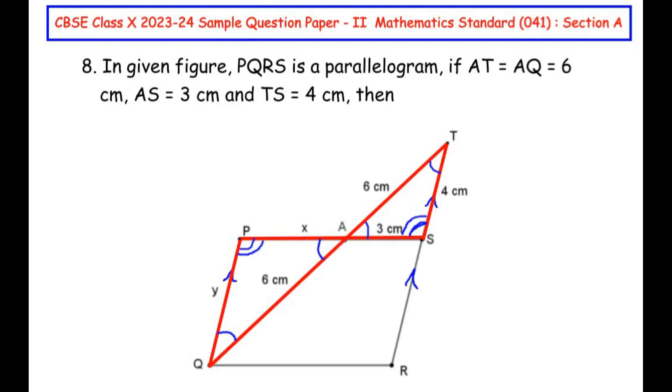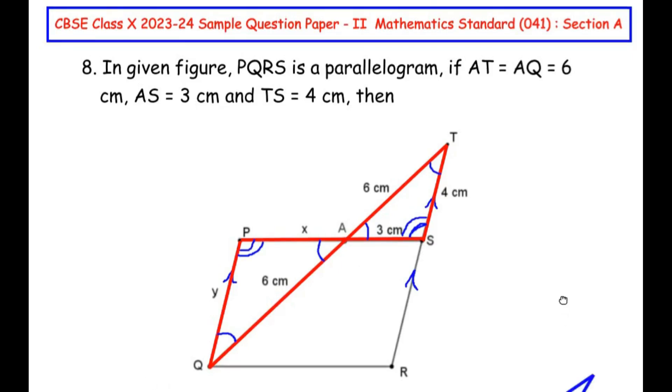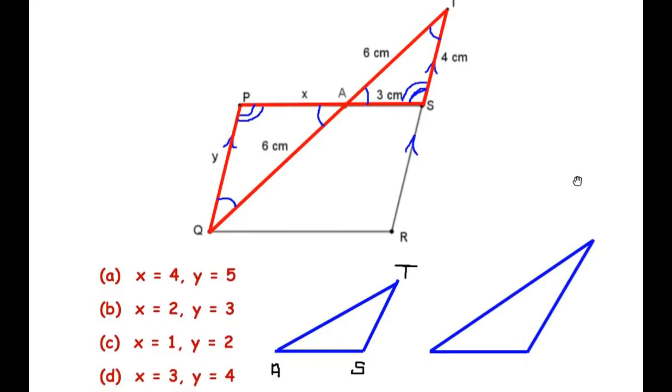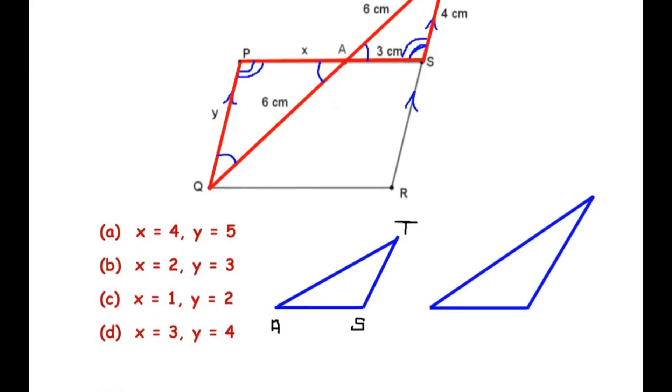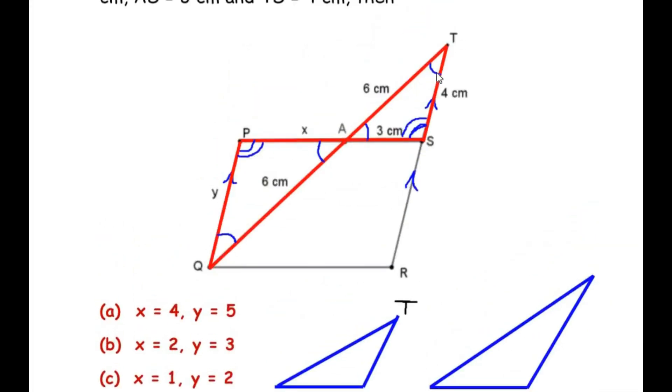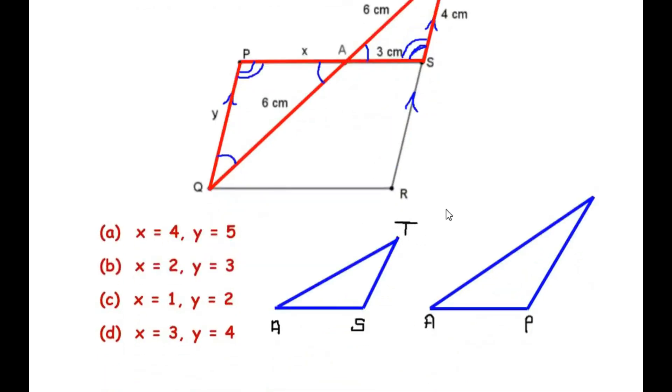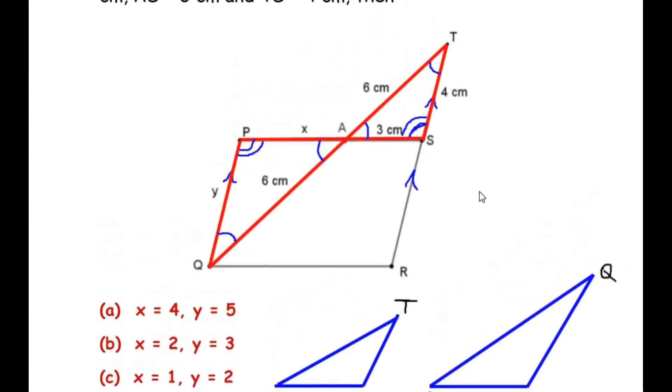So let me redraw these two triangles. Here I have redrawn the two triangles. First I have drawn the small triangle ATS. Now let us label the second triangle. Angle A was equal to angle A, so we are going to mark angle A where the angle A was there in the first triangle. Now next, let us look at angle S. Angle S was equal to angle P, so wherever angle S is there I'm going to write angle P. And finally, angle T was equal to angle Q, so wherever I have written T I'm going to write Q.